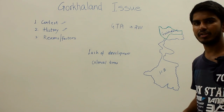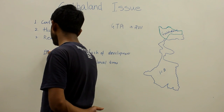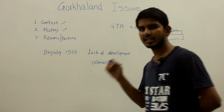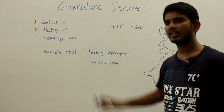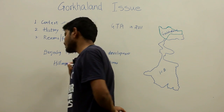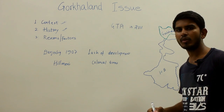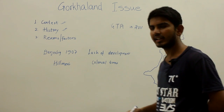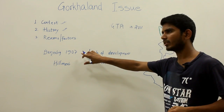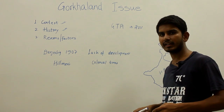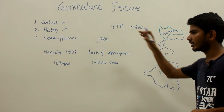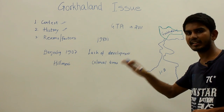The demand for a separate administrative unit in Darjeeling has existed since 1907, when the Hill Men's Association in Darjeeling submitted a memorandum to the Minto-Morley reforms demanding the setup of a separate administrative unit. During the 1980s, the movement elevated to a new phase — a demand for separate statehood — and gathered serious momentum.